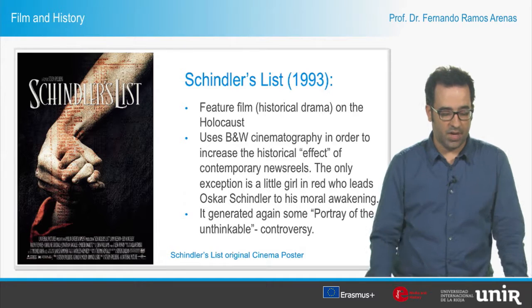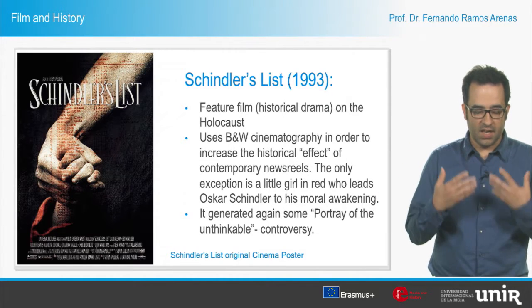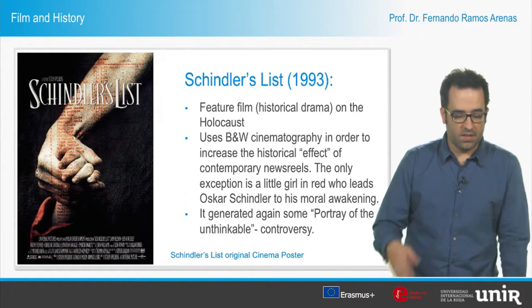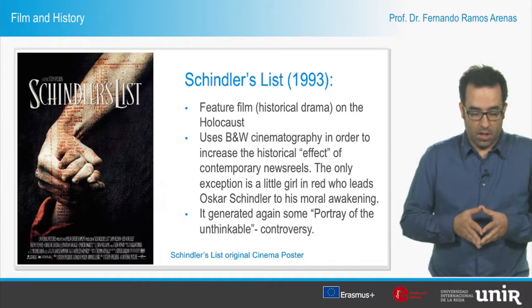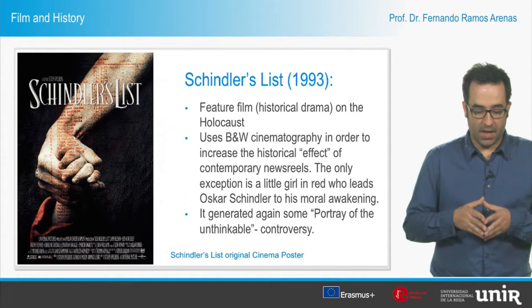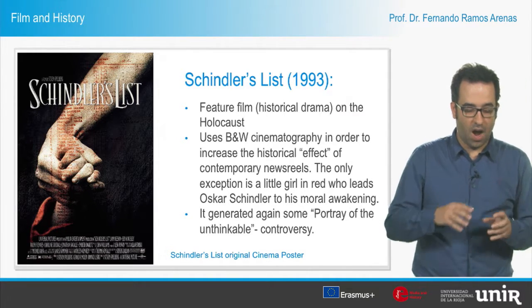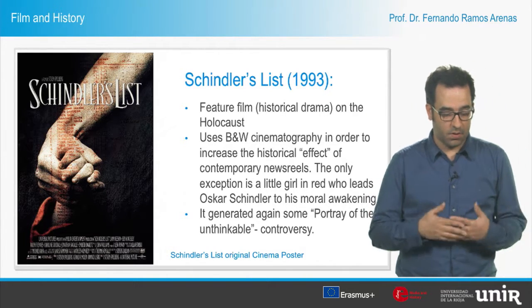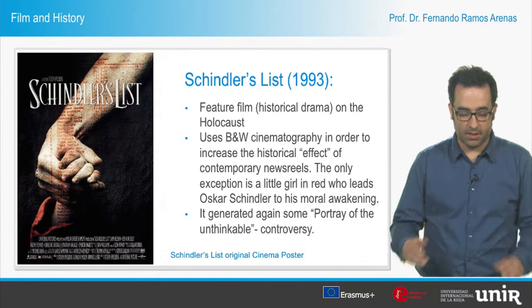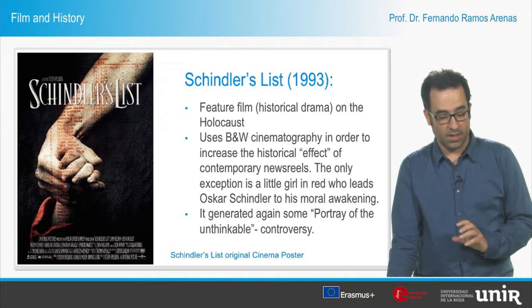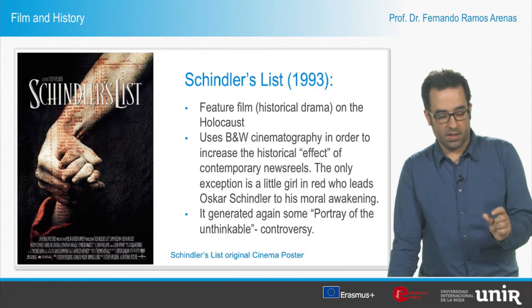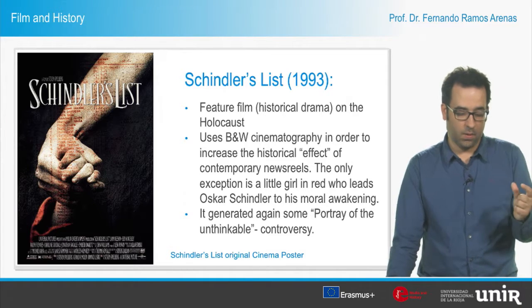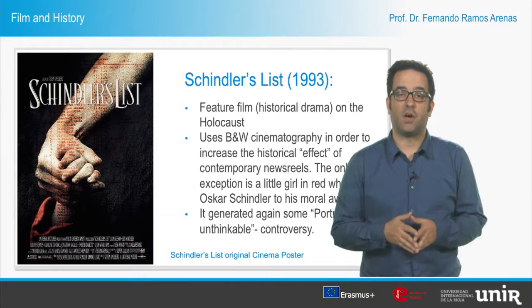Apart from the artistic consideration of black and white aesthetics, its use was an attempt to offer spectators a more realistic approach to the images. The connection to historical facts was enabled by the use of codes regarding the traditional representation of war in those years. Reality was therefore constructed by taking into account certain aesthetic decisions, which generated controversy regarding the classical discussion about the portrait of the unthinkable — that is, about the ethics of a right representation of the Holocaust.